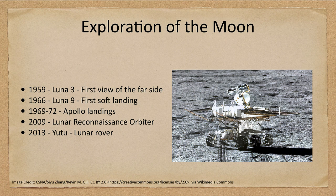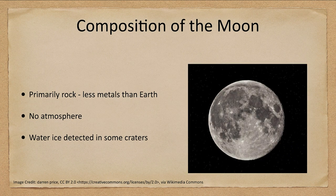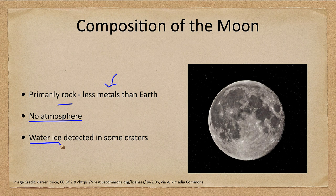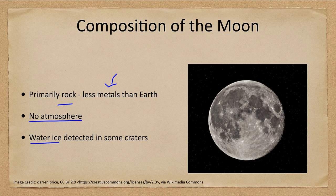So what is our moon made up of? It is primarily rocky material with far less metal than Earth — we'll come back to this when we look at how the moon formed. It has no atmosphere to speak of, but it does have some water ice in craters. Water ice cannot exist on most of the moon because the sun would vaporize it during the lunar day. However, near the polar regions there are craters permanently shielded from direct sunlight, and at some point a comet crashing into the moon could have deposited water there. So there is some water ice on the moon, but much less than on Earth.